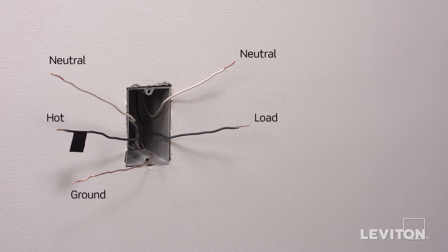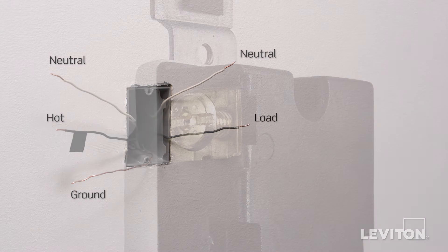The hot wire may be black or red. The ground wire could be green or bare copper. If you're unsure, contact an electrician.